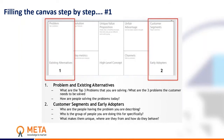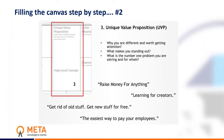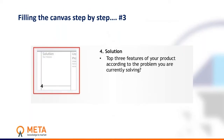Once we have identified early adopters, we can investigate existing alternatives — understanding how they are trying to solve that problem today. At this point, we can focus on the unique value proposition, highlighting what makes us stand out: how we are going to solve the problem better than alternative solutions. Once we have validated the unique value proposition, we have all the information needed to describe our solution.